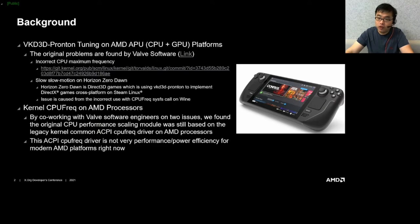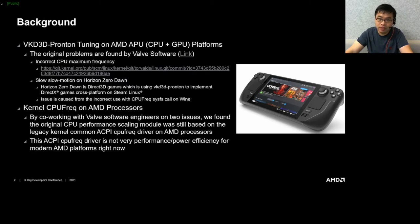Moving to the background: we were working with the Valve engineers to enable the Steam Deck on the AMD platform early this year. While we were tuning the Steam game's performance on Vulkan 2D/3D workloads, they found two issues on AMD processors. One is something wrong with the CPU frequency reporting, and another is a slow-motion issue on Horizon Zero Dawn. We spent a long time investigating them.